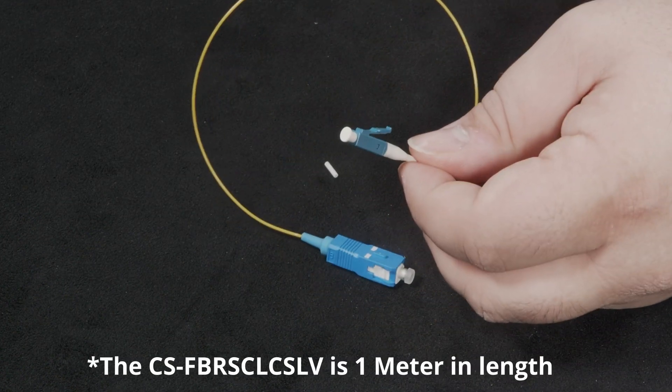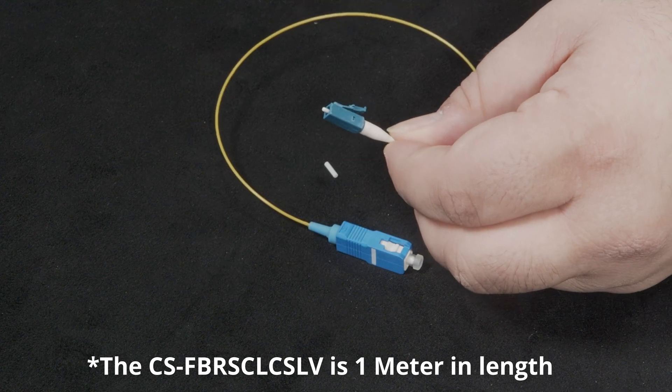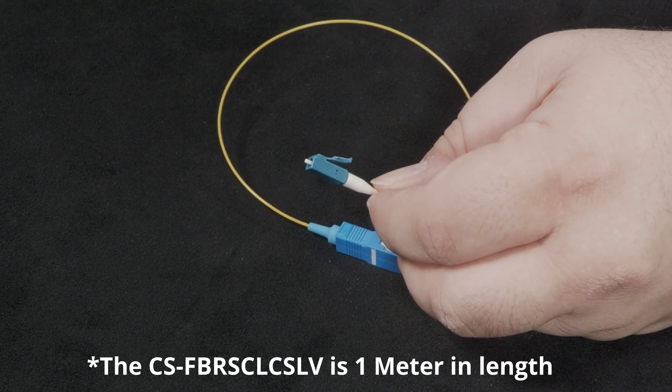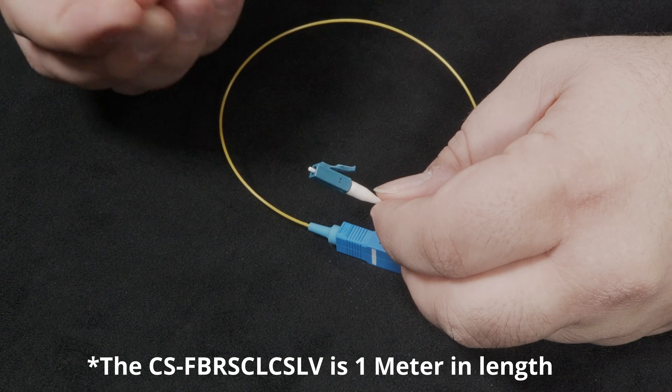The SC to LC adapter is used next to ensure that a proper termination has been set. Prepare the SC and LC adapter with the included sleeve by sliding the sleeve over the white portion of the LC connector.